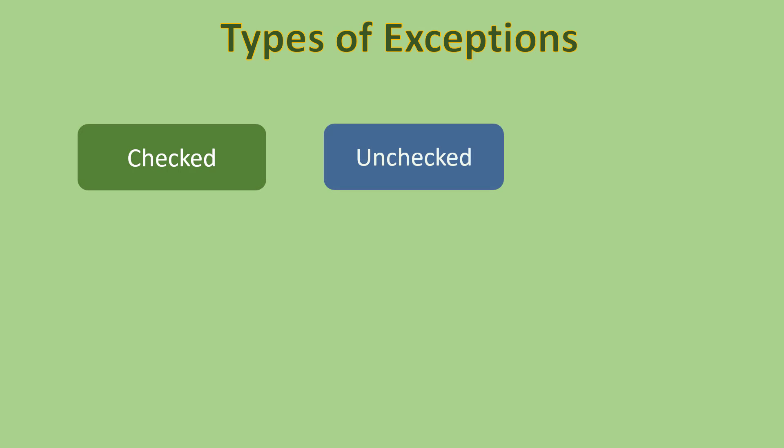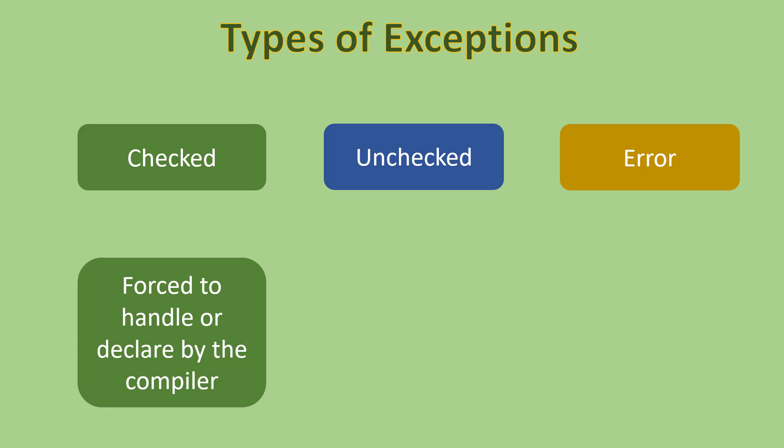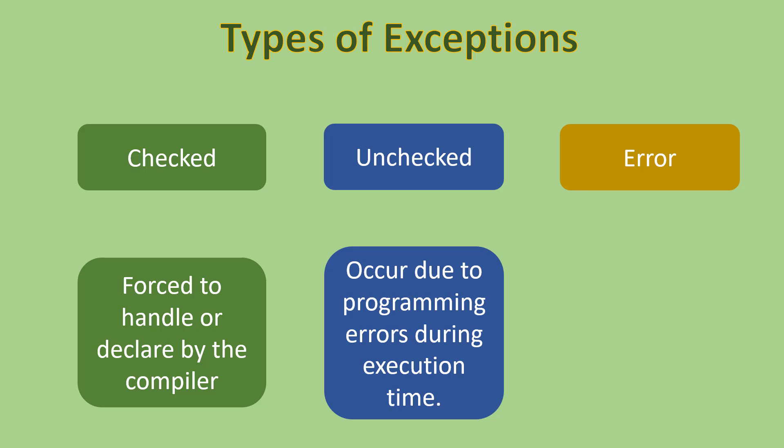All exceptions can be classified into three categories: checked exceptions, unchecked exceptions, and errors. Checked exceptions are those that you need to handle or declare while writing code. Since they are checked by the compiler at compile time, these are called checked exceptions. Unchecked exceptions occur due to programmatic errors, such as calling a method on a null object or accessing an array index more than its length. These exceptions are raised at runtime, hence they are called runtime exceptions. Since they arise at runtime, they cannot be checked by the compiler. Examples are NullPointerException, ArrayIndexOutOfBoundsException, etc.